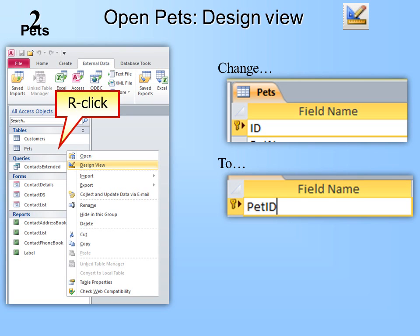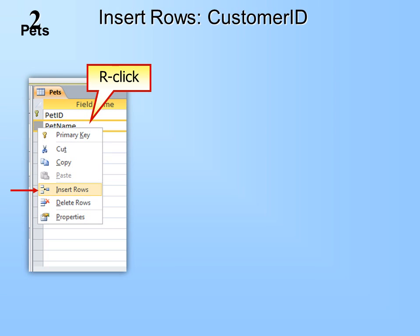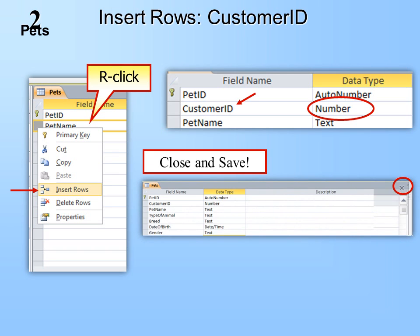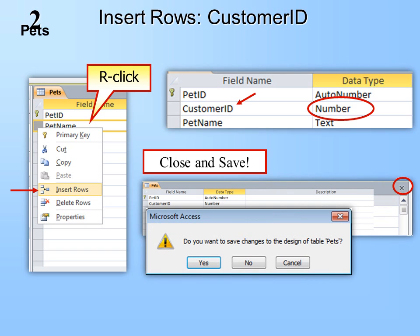Now we've opened our Pets table. Because it was imported from Excel, we want to make some minor changes. Go into Design View by right-clicking on the table name and choosing Design View. We're going to change the field name ID to Pet ID. It's important when naming your primary keys that you name them after the table — naming convention is very important in Access. Right-click on the field name Pet Name and insert a row above it. The first row we're going to insert is Customer ID, which is the foreign key from the Customer table. Make sure its data type is Number, because Customer ID in the Customer table was AutoNumber, so it must link to a Number.